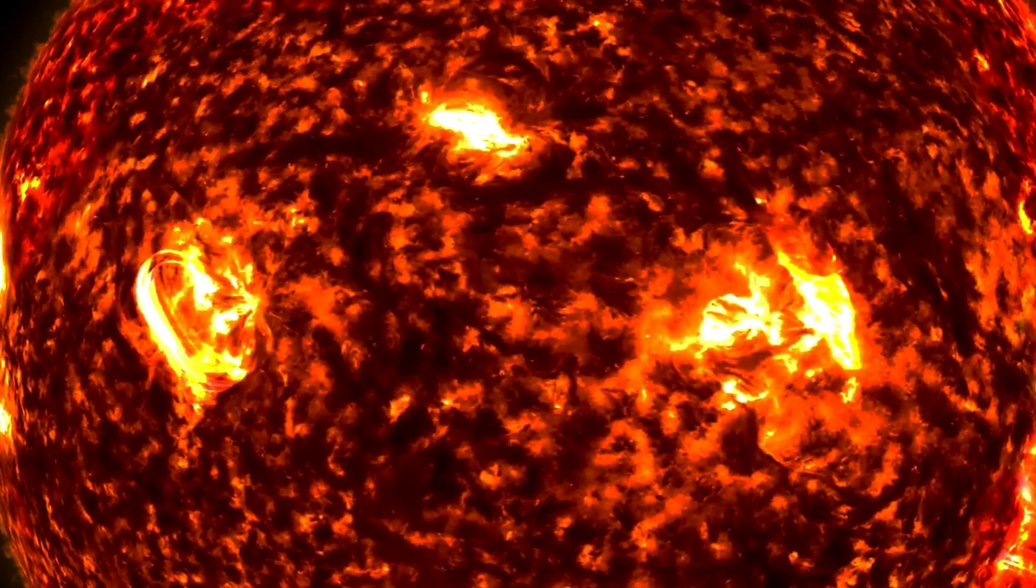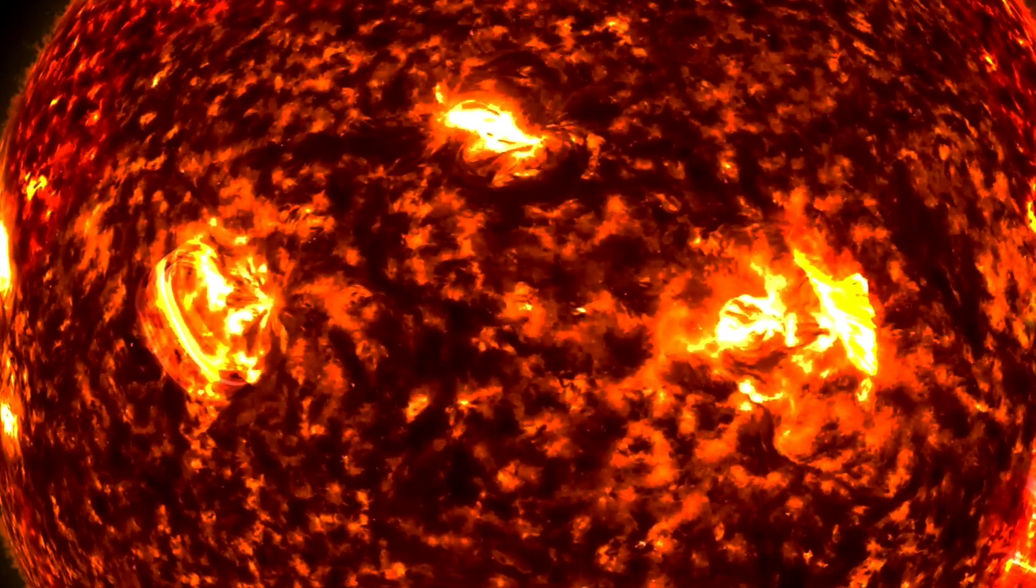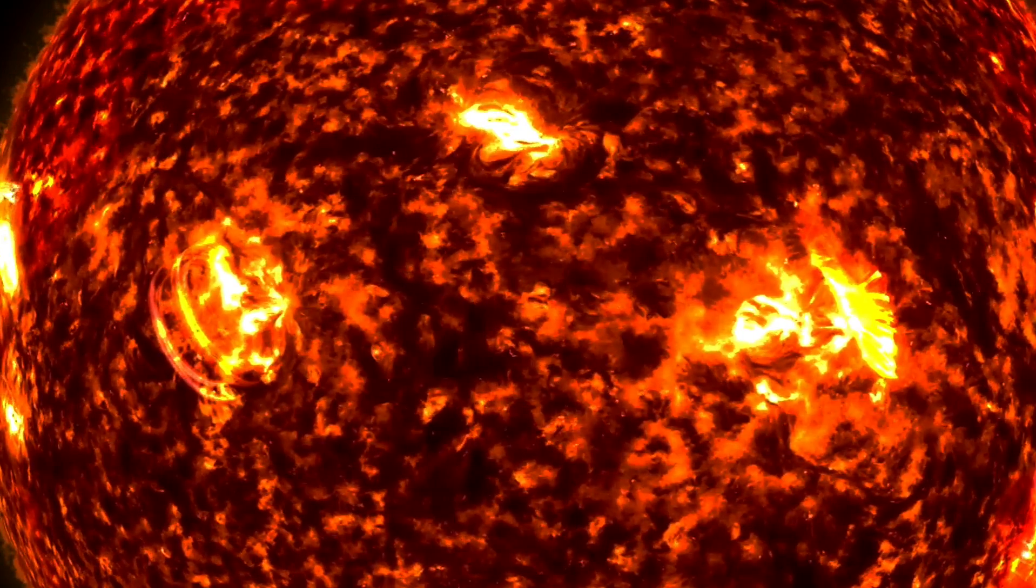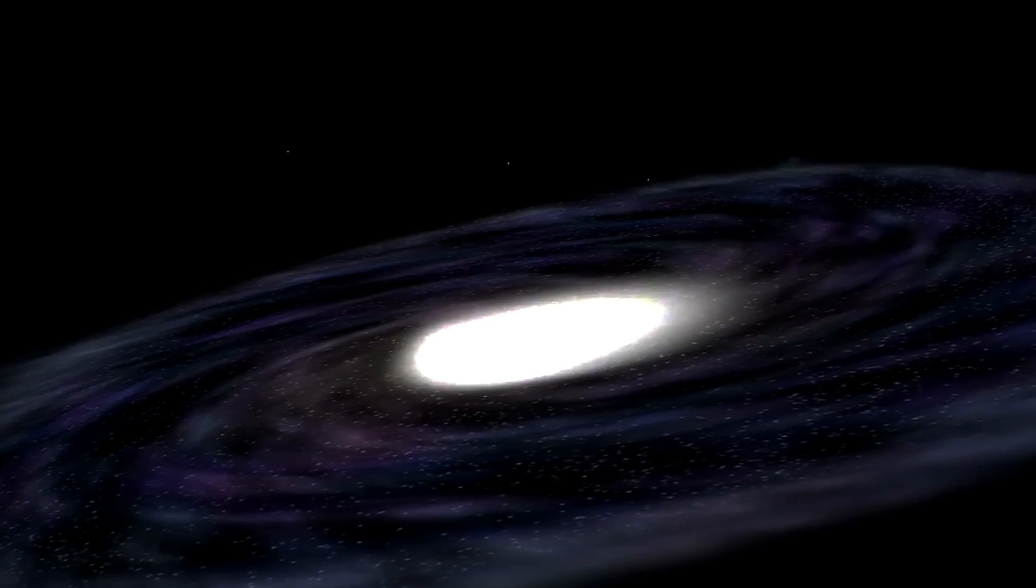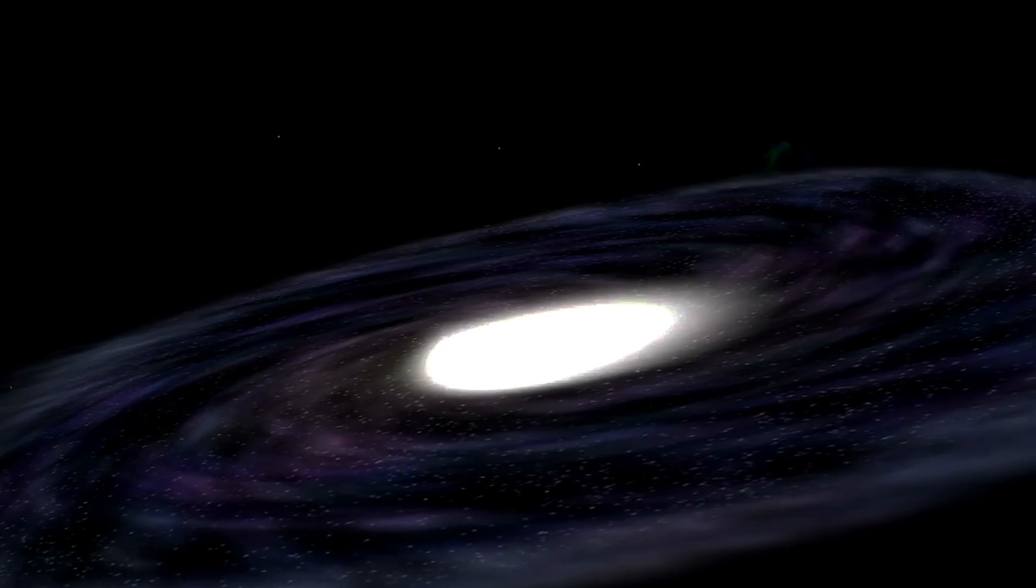For example, if the sun were compressed into a single point, it would have a Schwarzschild radius of just 3 kilometers. Inside this radius, escape becomes impossible, as it would require traveling faster than the speed of light.